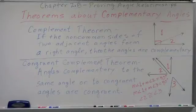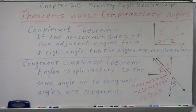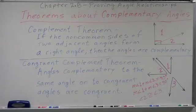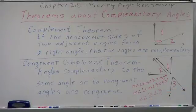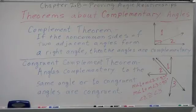The congruent complement theorem is just like the congruent supplement theorem. Angles that are complementary to the same angle or to congruent angles are congruent. We have three angles — angle one, two, and three. Given that the measure of angle one plus the measure of angle two equals 90 degrees, and the measure of angle one plus the measure of angle three equals 90 degrees, then angle two is congruent to angle three. The proof is almost identical to the one for the congruent supplement theorem. These are two important theorems you'll use quite a bit when dealing with complementary angles in proofs.